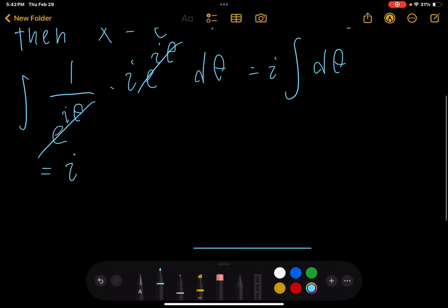which is i theta plus c. But we said x equals e to the i theta, so take the natural log on both sides.